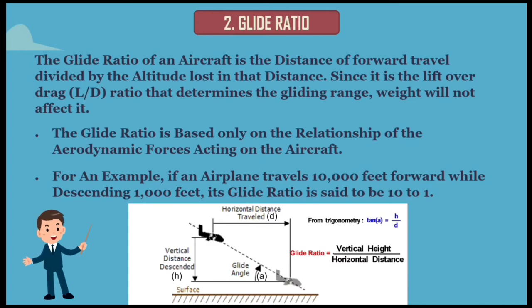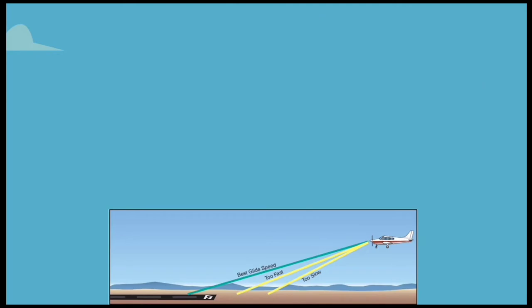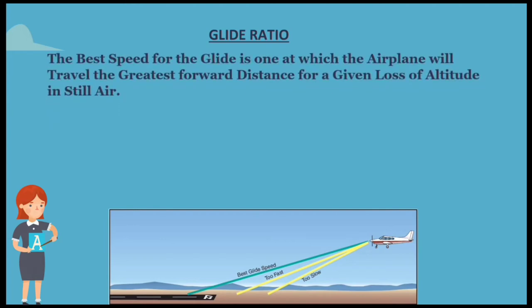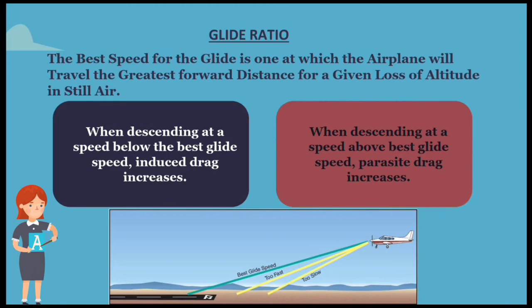For example, if an airplane travels 10,000 feet forward while descending 1,000 feet, its glide ratio is said to be 10 to 1. Observe this figure to get a clear understanding. The best speed for the glide is one at which the airplane will travel the greatest forward distance for a given loss of altitude in still air. Any change in the gliding airspeed will result in a proportionate change in glide ratio. When descending at a speed below the best glide speed, induced drag increases. When descending at a speed above best glide speed, parasite drag increases.